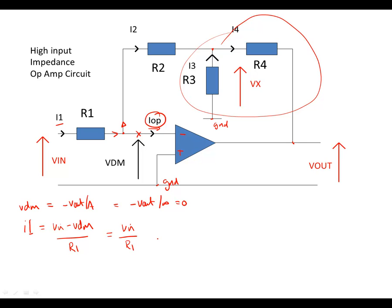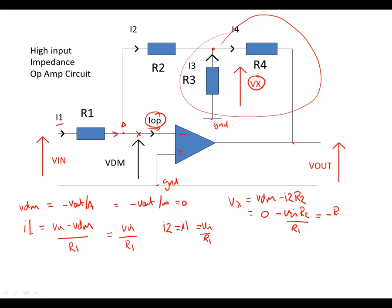Let's write out I2, the current flowing here. I2 is equal to effectively I1 as we've just proven, therefore that is V in over R1. If we have a look at Vx — this node here of our circuit labelled Vx — we have Vx is equal to Vdm minus I2 times R2. We know that Vdm is equal to 0 and I2 is the same as I1, so we can now write Vx equals minus V in times R2 over R1, which simplifies down to minus R2 over R1 times V in.